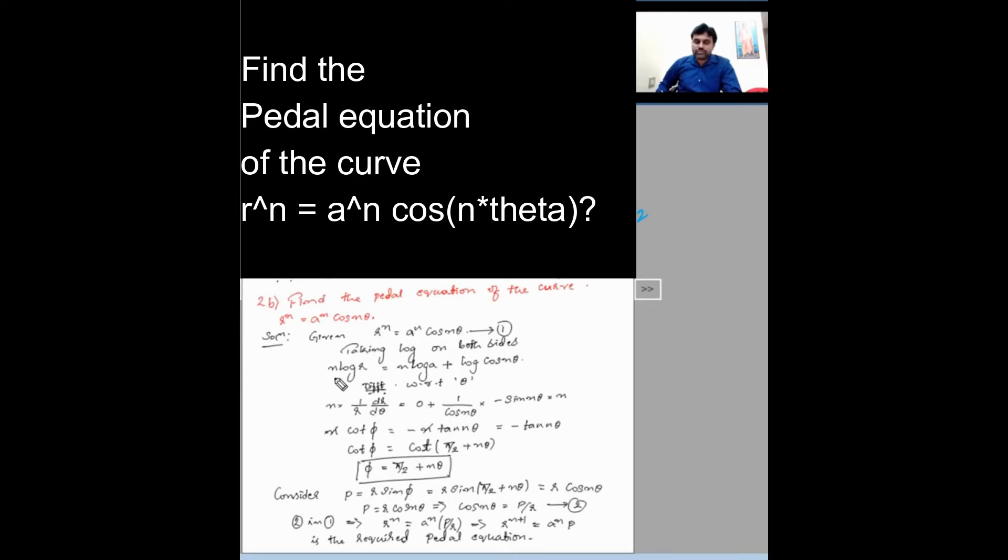Apply laws of logarithm. We are going to get n log r = n log a + log of cos n theta.